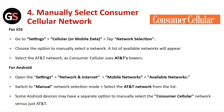Manually select Consumer Cellular network. For iOS, go to Settings, then Cellular. Tap on Network Selection and choose the option to manually select a network. A list of available networks will appear — select AT&T, as Consumer Cellular uses AT&T towers.